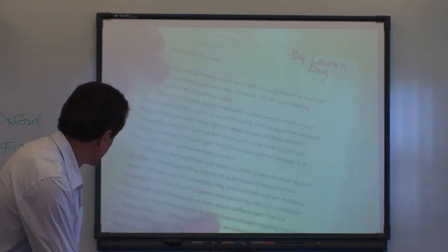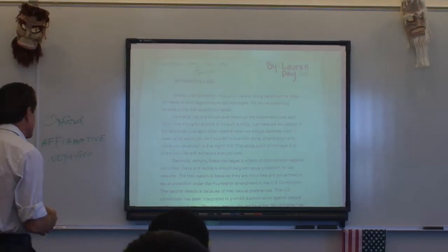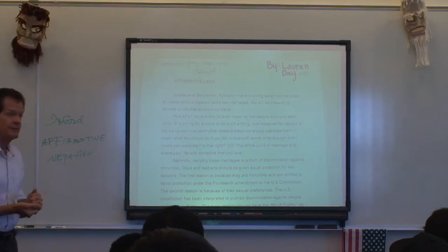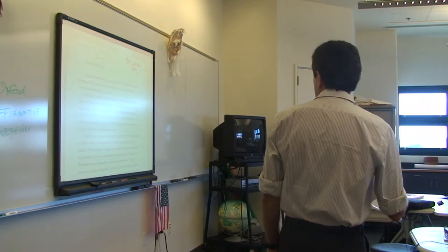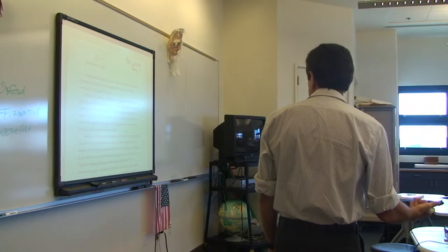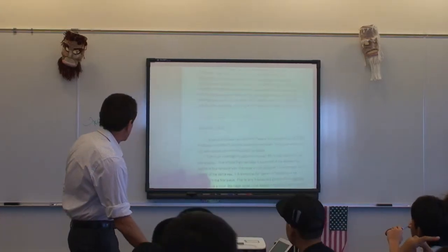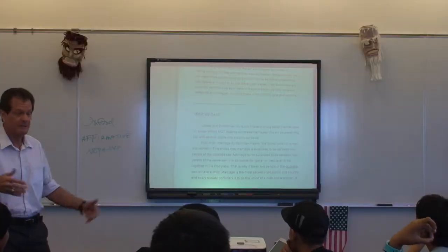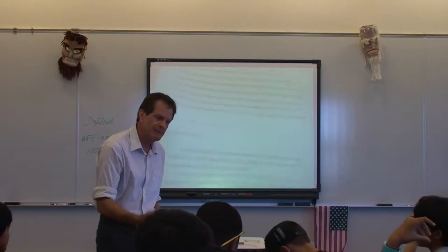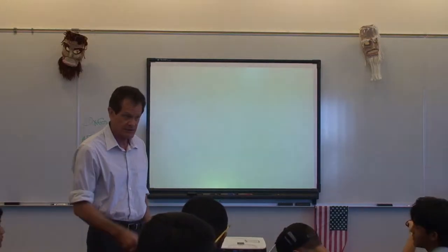Here's her affirmative case. You start off with a little appeal to the judges: 'Ladies and gentlemen, Kyle and I have a strong belief that the state of Hawaii should legalize same-sex marriages. We're representing several points that support our belief. First of all, no one should ever break up two people who love each other.' Then you go to the negative case: 'Ladies and gentlemen, Kyle and I have a strong belief that the state of Hawaii should not legalize same-sex marriages. First of all, a marriage by definition means the formal union of a man and a woman.' Your case should not be all opinion — it should have facts and figures in it. Otherwise it's going to be thin, watery, and not convincing to the judges.